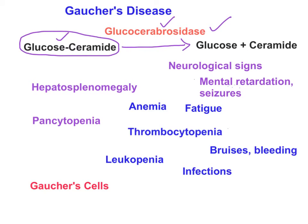Glucocerebroside is broken down into its individual components — glucose and ceramide — by the glucocerebrosidase enzyme. This enzyme is also called glucosylceramidase because it cleaves glucosylceramide, and beta-glucosidase because glucose is attached to ceramide via a beta-glycosidic bond. So the three names are: glucocerebrosidase, glucosylceramidase, and beta-glucosidase.